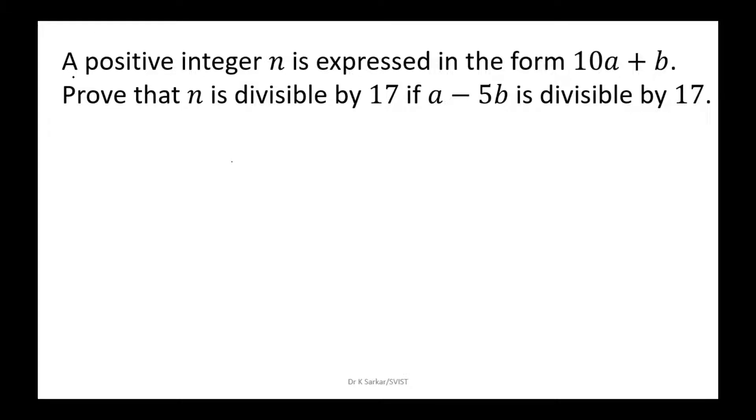A positive integer n is expressed in the form 10a plus b. Prove that n is divisible by 17 if a minus 5b is divisible by 17.